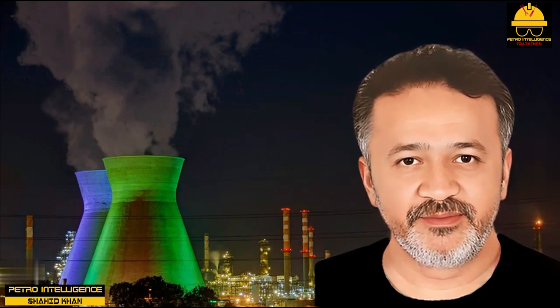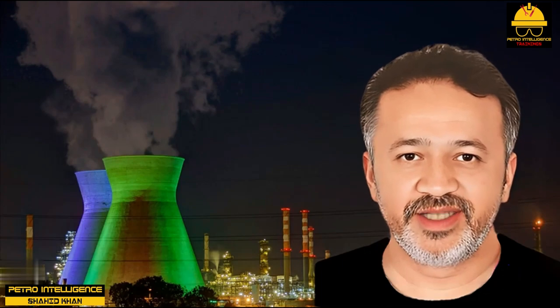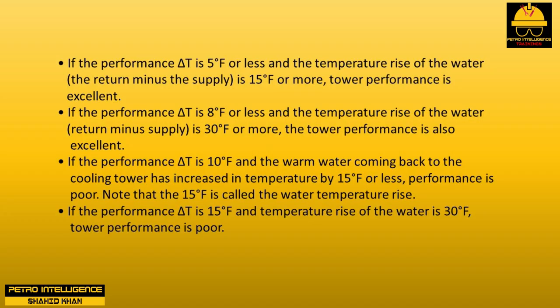Calculate the performance delta T: this is the difference between the water leaving the tower and the wet bulb temperature. Judge the performance of the cooling tower as follows: if the performance delta T is 5°F or less and the temperature rise of the water (return minus supply) is 15°F or more, tower performance is excellent. If the performance delta T is 8°F or less and the temperature rise of the water is 30°F or more, tower performance is also excellent. If the performance delta T is 10°F and the warm water coming back has increased in temperature by 15°F or less, performance is poor.